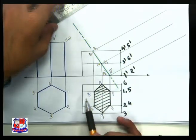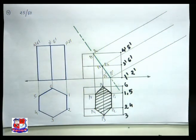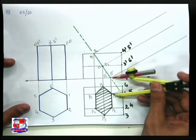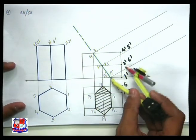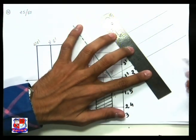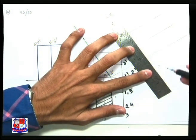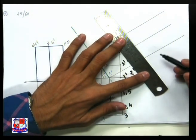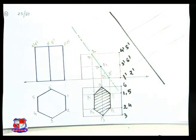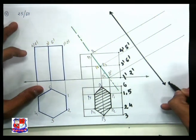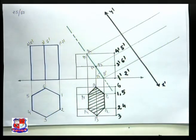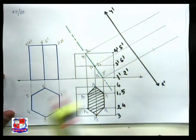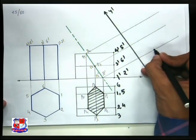The green-coloured line is the cutting plane line which makes an angle of 60 degrees with the XY line. Find out the distance of each respective point from the XY line — for example, point P1. Measure the distance from the XY line to point P1. Draw an auxiliary inclined plane, another reference line at any distance from the cutting plane, parallel to it. This can be named X dash Y dash or X1 Y1. Measure the distance of P1 to the XY line and mark point P1 on the auxiliary line.